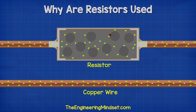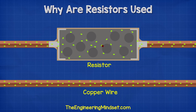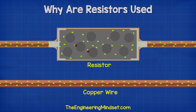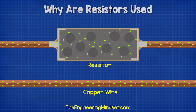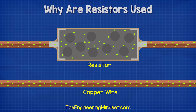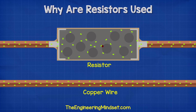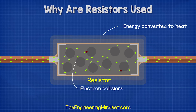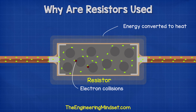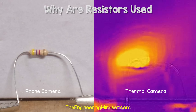The same with a resistor — the material makes it difficult for the electrons to flow through. The electrons are going to collide and waste energy, so we get a voltage drop. This wasted energy needs to go somewhere, so it leaves as heat. If we look at a resistor through a thermal imaging camera, we can see that heat leaving.